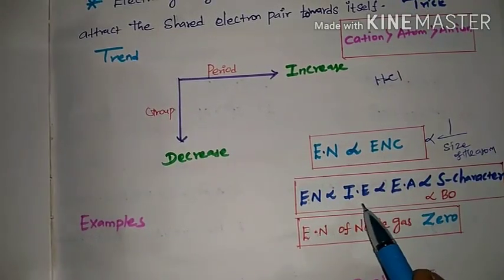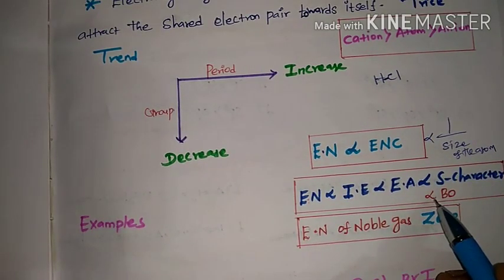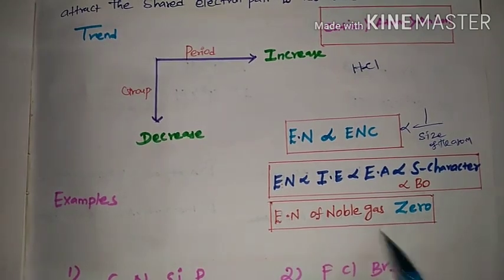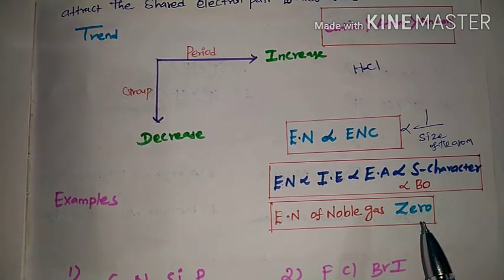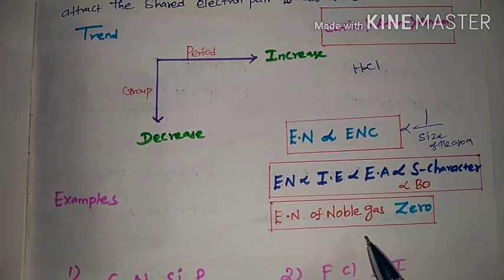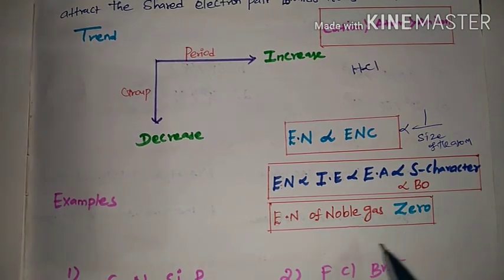The electronegativity of noble gases is zero. Noble gases are at the end of the periodic table — the zero group: Helium, Neon, Argon, Krypton. This is the noble gas system, which is why their electronegativity is zero.